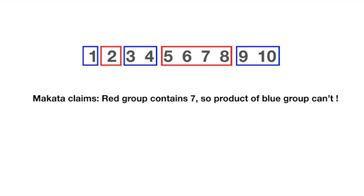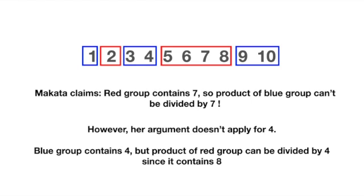At first glance, it looks like her argument makes sense but there's a minor math theorem which was implicitly assumed. See, Makata claimed that no matter how we group the numbers, one group always contains 7 and so the product of another group can never be divided by 7. If we give it a little thought though, this doesn't seem to be true.